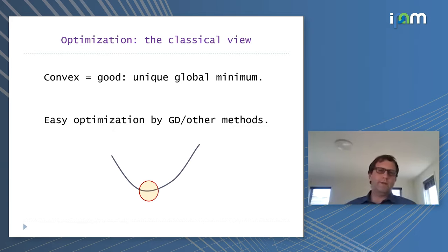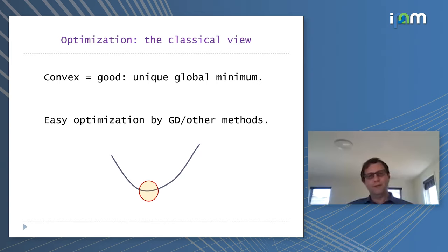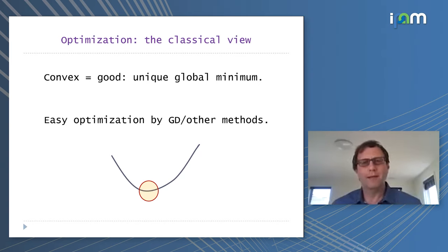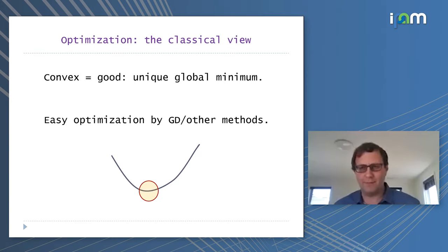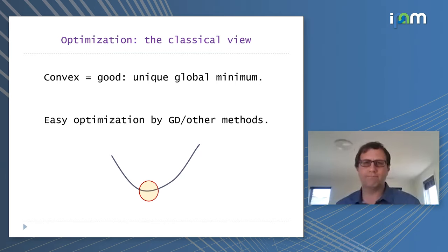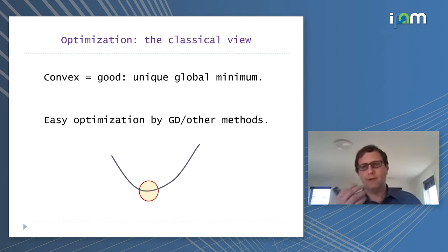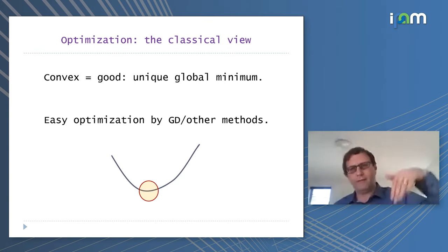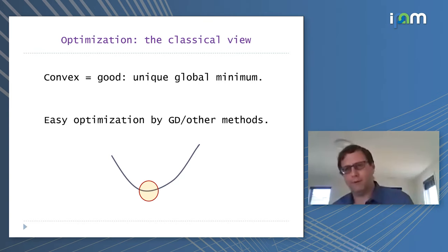In the classical view of optimization, convex is good because there is a unique global minimum and easy optimization by gradient descent. The picture we think about is something like a parabola — you have a minimum at the bottom and gradient descent goes down the slope. For an arbitrary nonlinear system, it's the converse: generically there are many local minima and no general global optimization techniques.